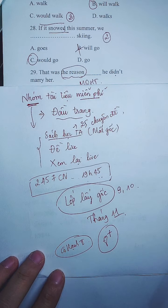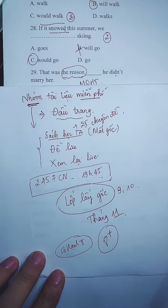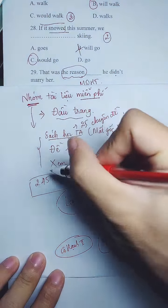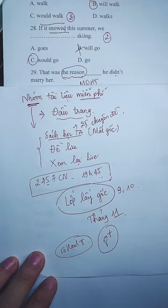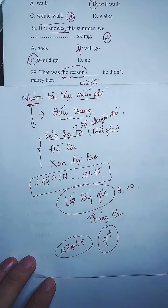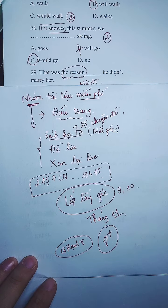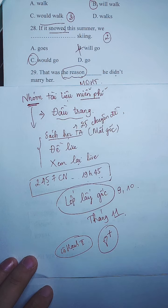Ngày mai chúng ta sẽ tiếp tục học theo lịch — mai là thứ 5. Cô sẽ gửi tài liệu cho các bạn, rồi sau đó chúng ta sẽ làm bài. Mọi người thả tim tích cực. Chúng ta sẽ kết thúc buổi học ngày hôm nay ở đây nếu không có thắc mắc.